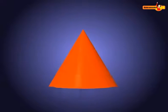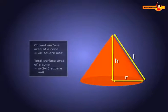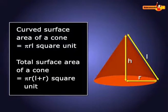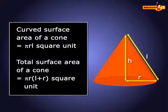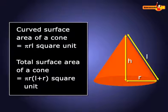Let us consider a right circular cone with radius r, height h, and slant height l. The curved surface area of the right circular cone is equal to πrl square unit. Total surface area of the cone is equal to πr(l+r) square unit.